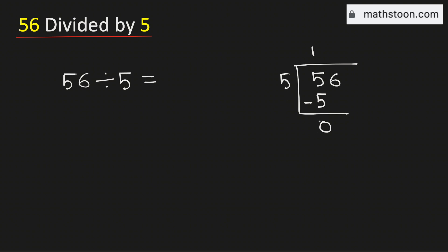As 5 cannot go into 0, that is why we need to bring down this number 6 here. As there is no meaning of zeros on the left, so we will remove this.